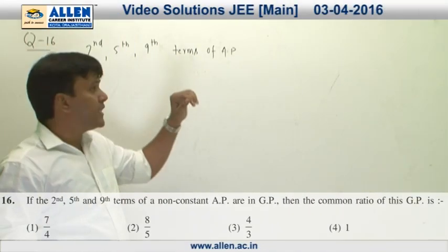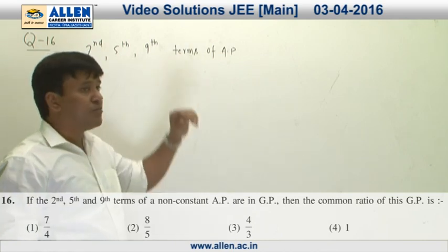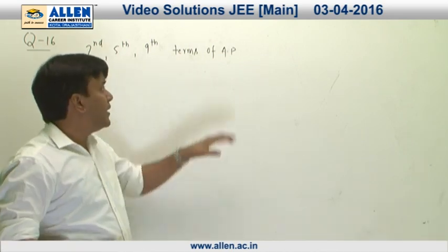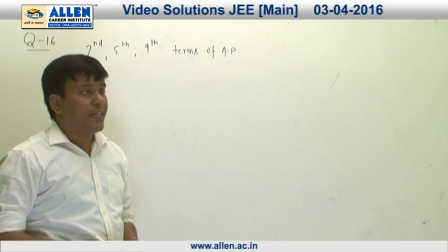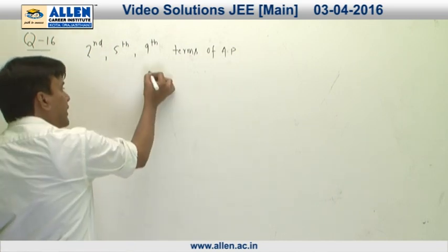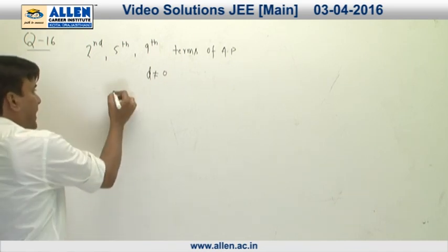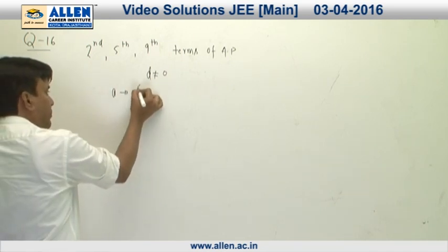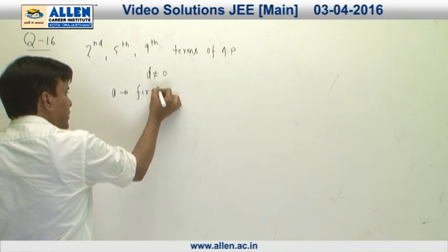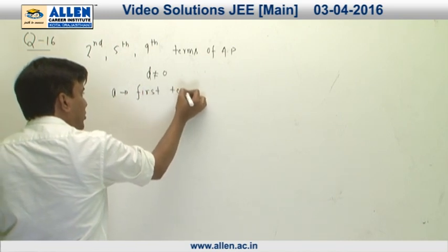In question number 16, it is given that second, fifth and ninth terms of an AP are in GP. It is already given that AP is a non-constant AP, so the common difference of the AP is going to be non-zero. Suppose A is the first term of this AP and D is the common difference.